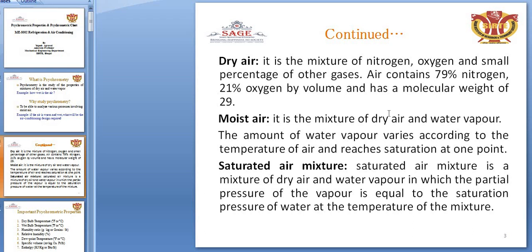Air contains 79% nitrogen and 21% oxygen by volume basis. Together they make up 100%, and the molecular weight of air is 29.